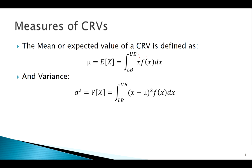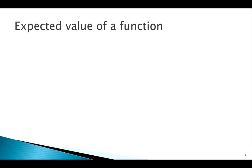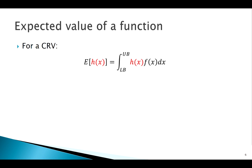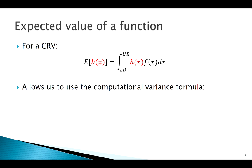For the variance, we integrate over all values of x the squared deviations (x minus the mean) squared times the PDF. The standard deviation is just the square root of the variance. We also saw that the expected value of a function works similarly to discrete: for a continuous random variable, it's that function times the PDF integrated over all values of x. This leads us to the computational form of the variance.